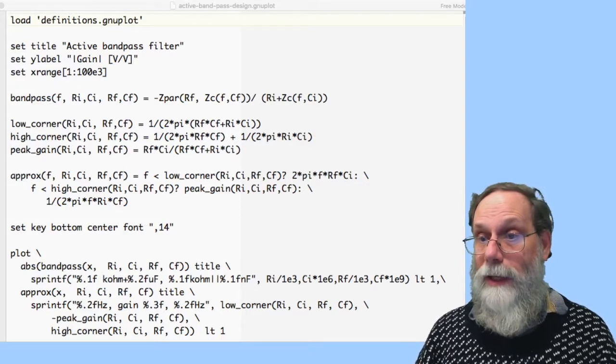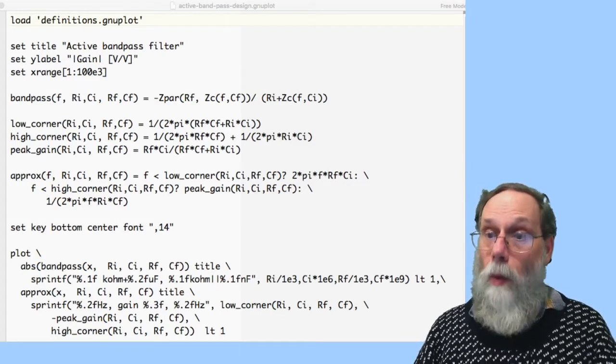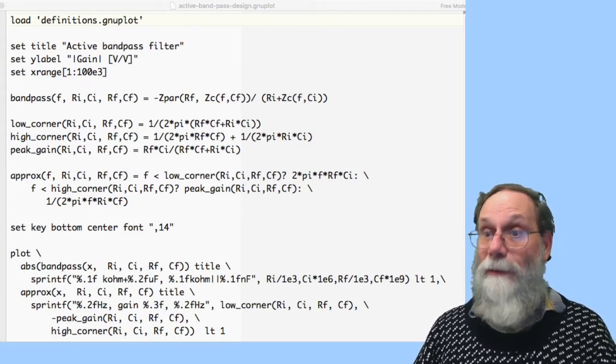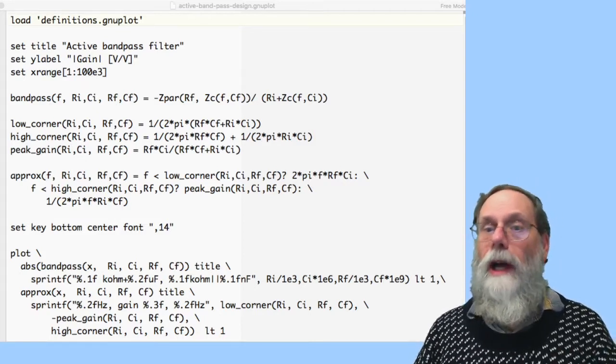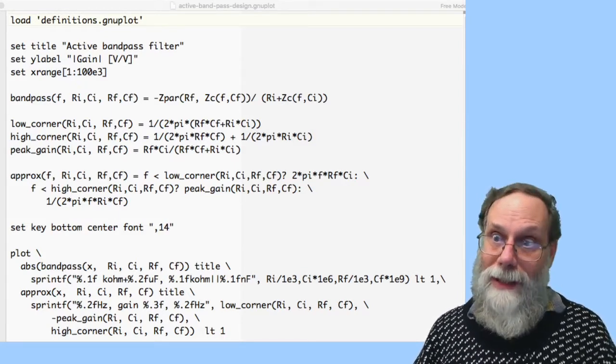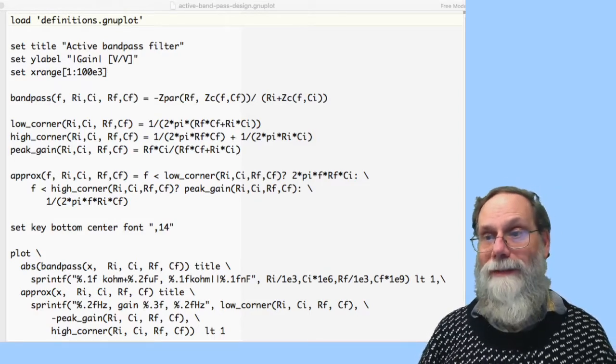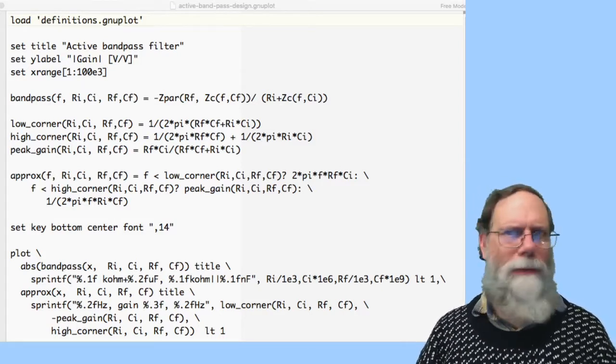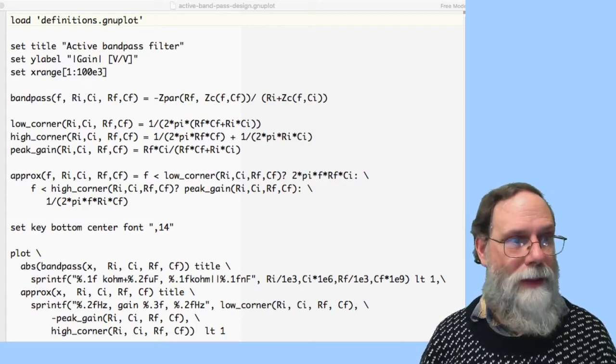And then I did an approximation function. The approximation one is take the asymptotic line up to the low corner frequency, take the peak gain over to the high corner frequency, and then take the other asymptotic line coming down. Then I've got plotting out the thing, plot out the actual absolute value of the gain, and print out echoing in the legend what the resistors and capacitors I'm actually using are. That'll help me catch if I have a typo there.